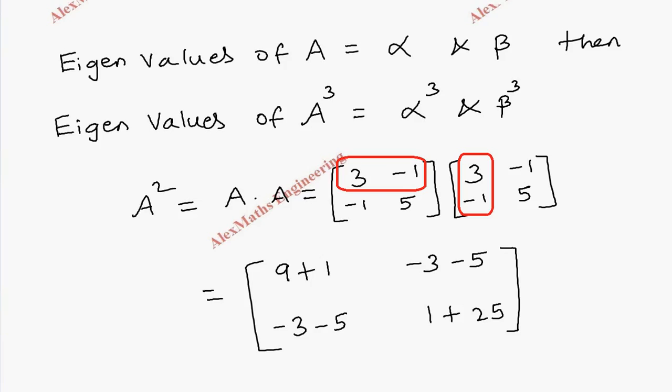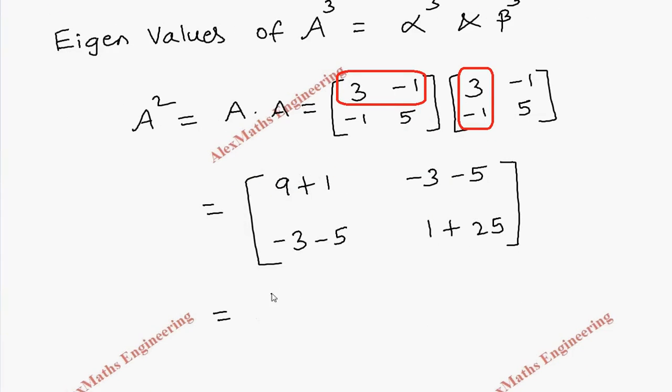So we completed the product. And the elements of A square here are 10, minus 8, minus 8, 26.